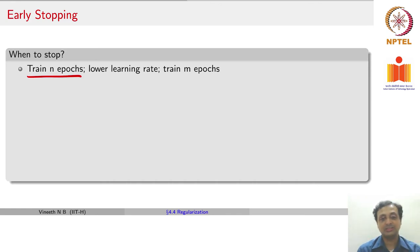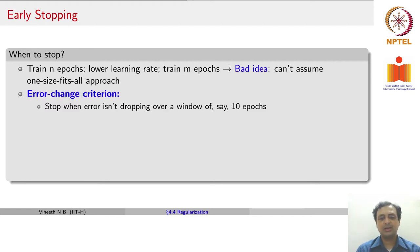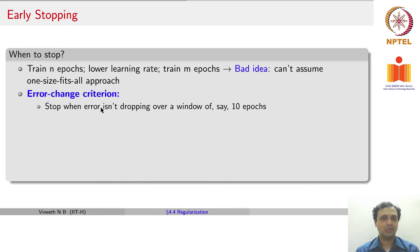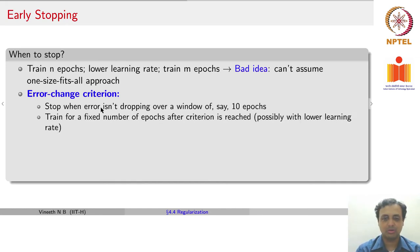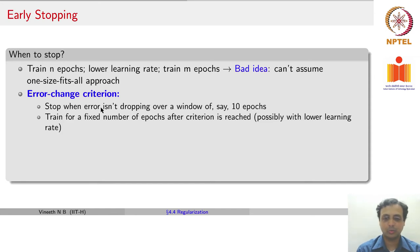We are going to talk about a few heuristics to decide when to stop training. One thing you can do is train n epochs, lower the learning rate, train m epochs, and so on. But this is not a very advisable approach because you do not know what n and m should be for all kinds of neural network models. Instead, we can use a criteria known as the error change condition. In this condition, we keep checking how the error has been dropping over a window of epochs — it could be 10, 5, or 3 epochs — and if the error is not dropping significantly, you say it is time to stop. After you stop, you can always train for a fixed number of additional iterations just to ensure you get closer to the critical point.